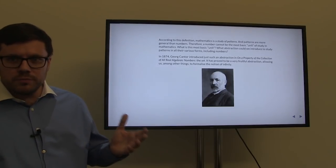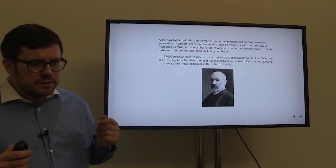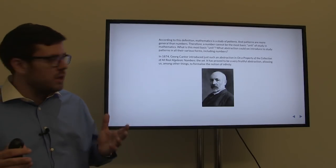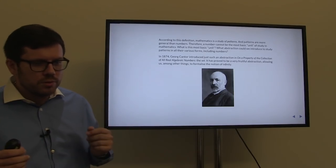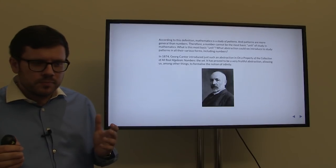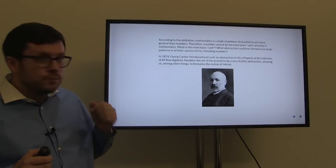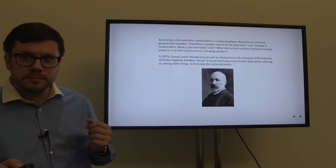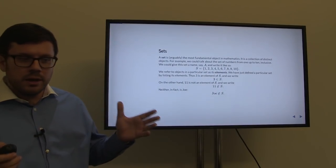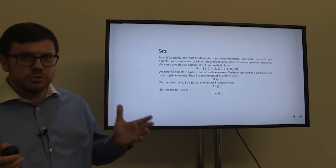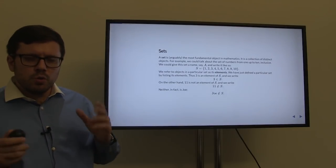This was an open question for a very long time, until in 1874, Georg Cantor introduced just such an abstraction in his paper entitled 'On a Property of the Collection of All Real Algebraic Numbers.' He introduced the set. It has proved to be an extremely fruitful abstraction, allowing us, among other things, to formalize the notion of infinity. Thus we begin the study of set theory, an essential prerequisite to most of modern mathematics, including machine learning.